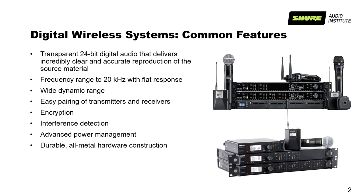Batteries can be charged in the transmitters, or in some cases removed and placed into separate charging trays. ULXD, QLXD, and Axient Digital feature metal hardware construction on receivers and transmitters. All are rack-mountable and can be configured in multiples to scale systems significantly. The frequency response and dynamic range of these digital systems is noticeably better than even the best analog systems, and due to the digital transmission scheme, audio quality is not directly affected by the quality of the RF link.